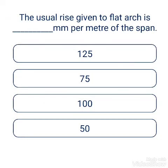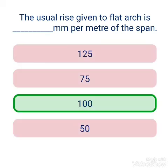The usual rise given to a flat arch is dash meters per meter of span. The options are: 1/25, 1/75, 1/100, and 1/50. The answer is 1/100 m per meter of span.